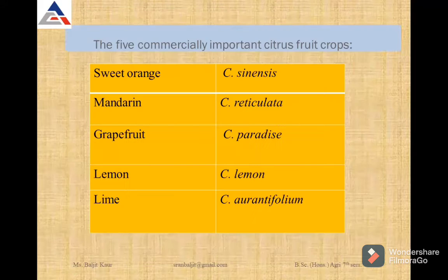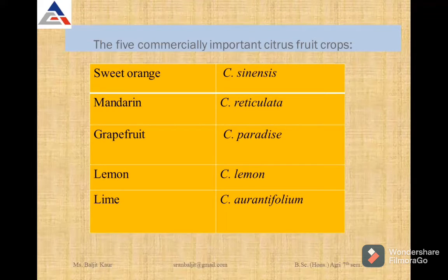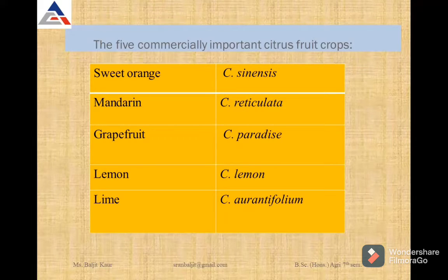There are different species of citrus which have economic importance. The first group is Sweet Orange and the scientific name is Citrus sinensis. Different varieties coming under Sweet Orange include Valencia, Jaffa, and Mosambi.